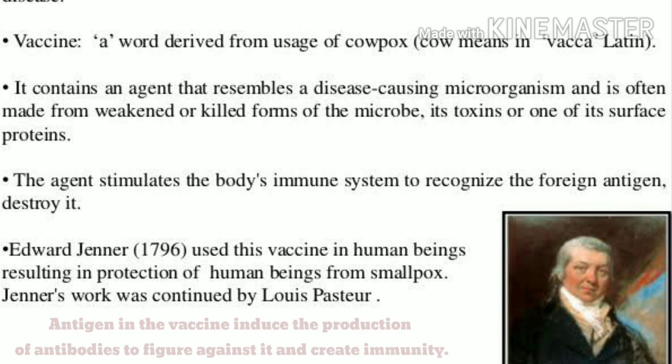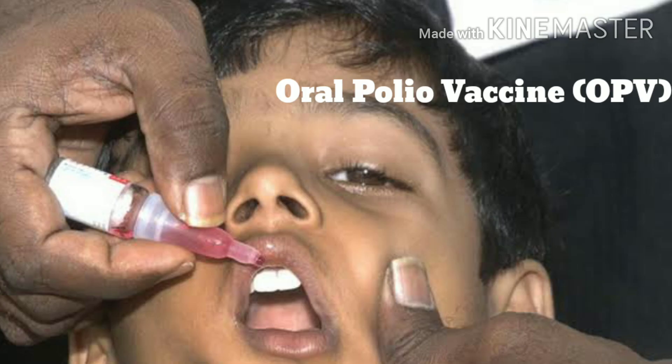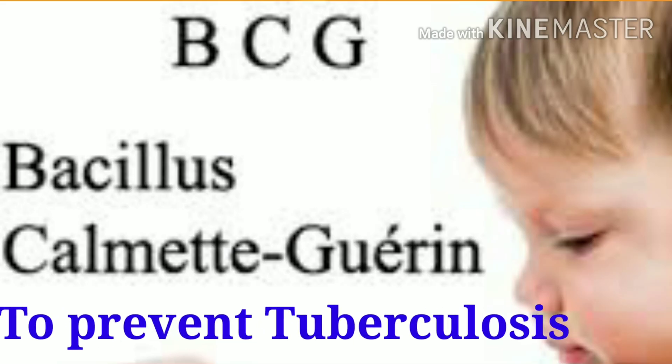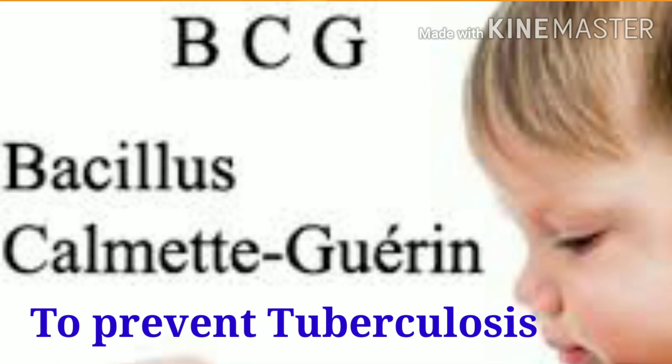Other important vaccines include the Oral Polio Vaccine (OPV), the MMR vaccine for measles, mumps, and rubella, and the BCG vaccine (Bacillus Calmette-Guérin).